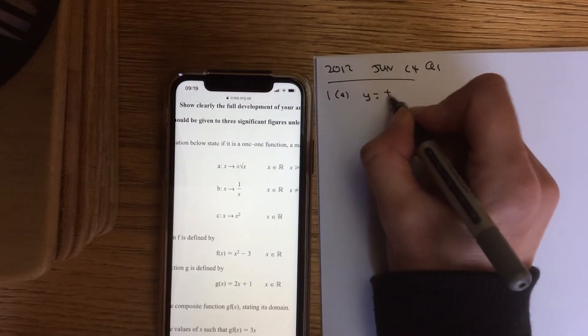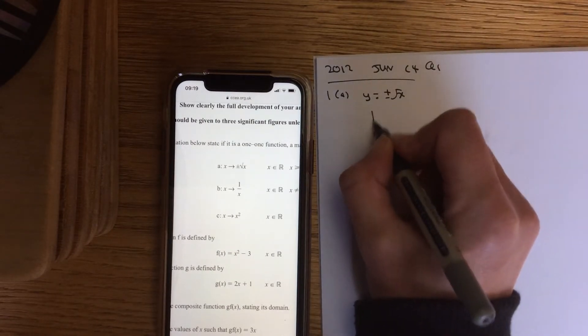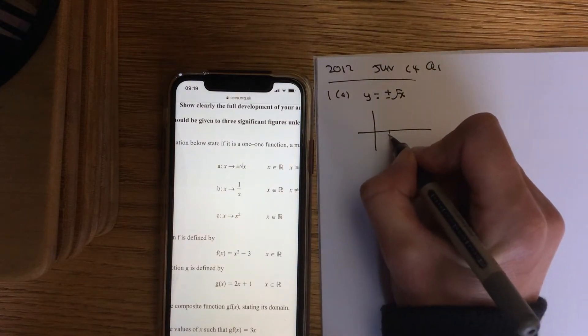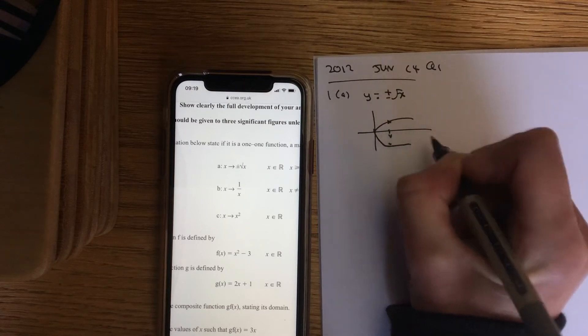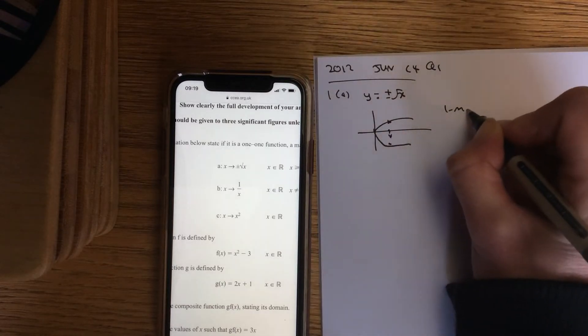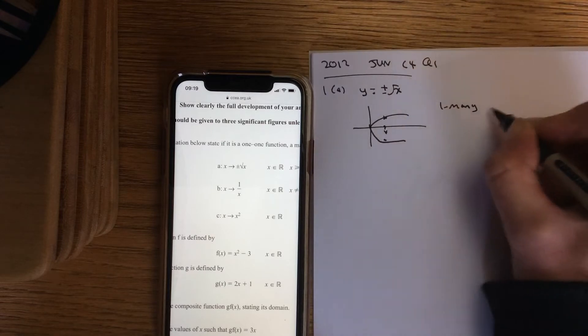So part 1, we've got plus or minus the square root of x. So if you think about this, say if x is 4, it could be a positive 2, square root of it or a negative 2. It's a 1 goes to many and that's a mapping.